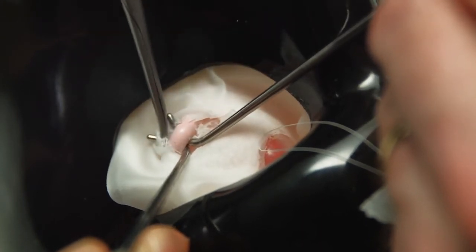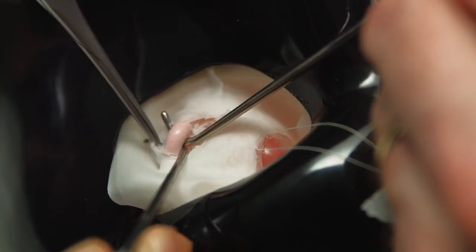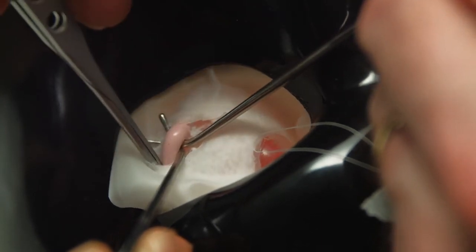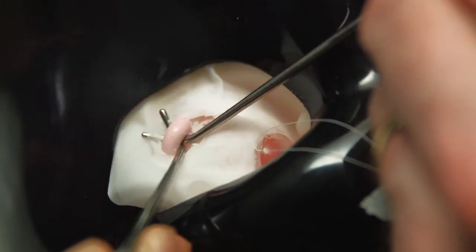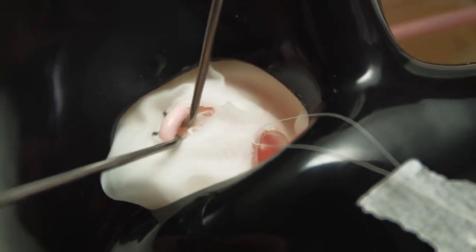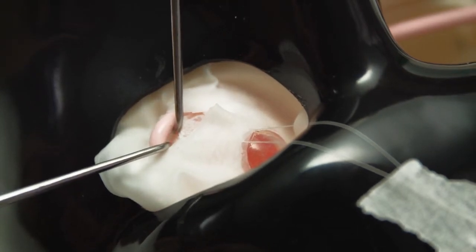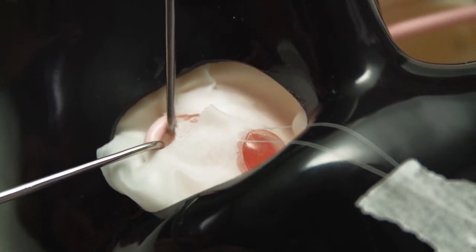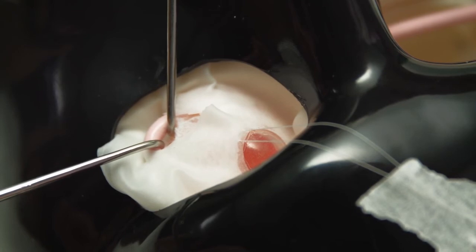The next maneuver we teach the trainees is to look for the posterior fibers of the inferior bleak to make sure they've all been hooked. They will be with this model eye because it isn't made from material which can be split, but nevertheless an important maneuver to teach.